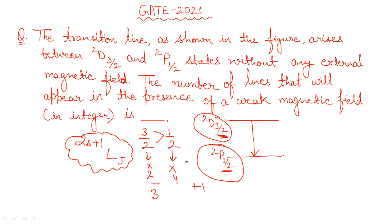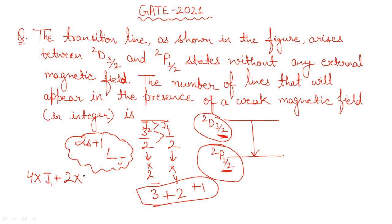To find the number of transition lines in the presence of a field, use this trick: compare the J values — 3/2 is greater than 1/2. Multiply the smaller J value by 4 and the larger J value by 2, then add 1. So: 4 × (1/2) + 2 × (3/2) + 1 = 2 + 3 + 1 = 6. The answer is 6 transition lines. The formula is: 4 × J_smaller + 2 × J_larger + 1.